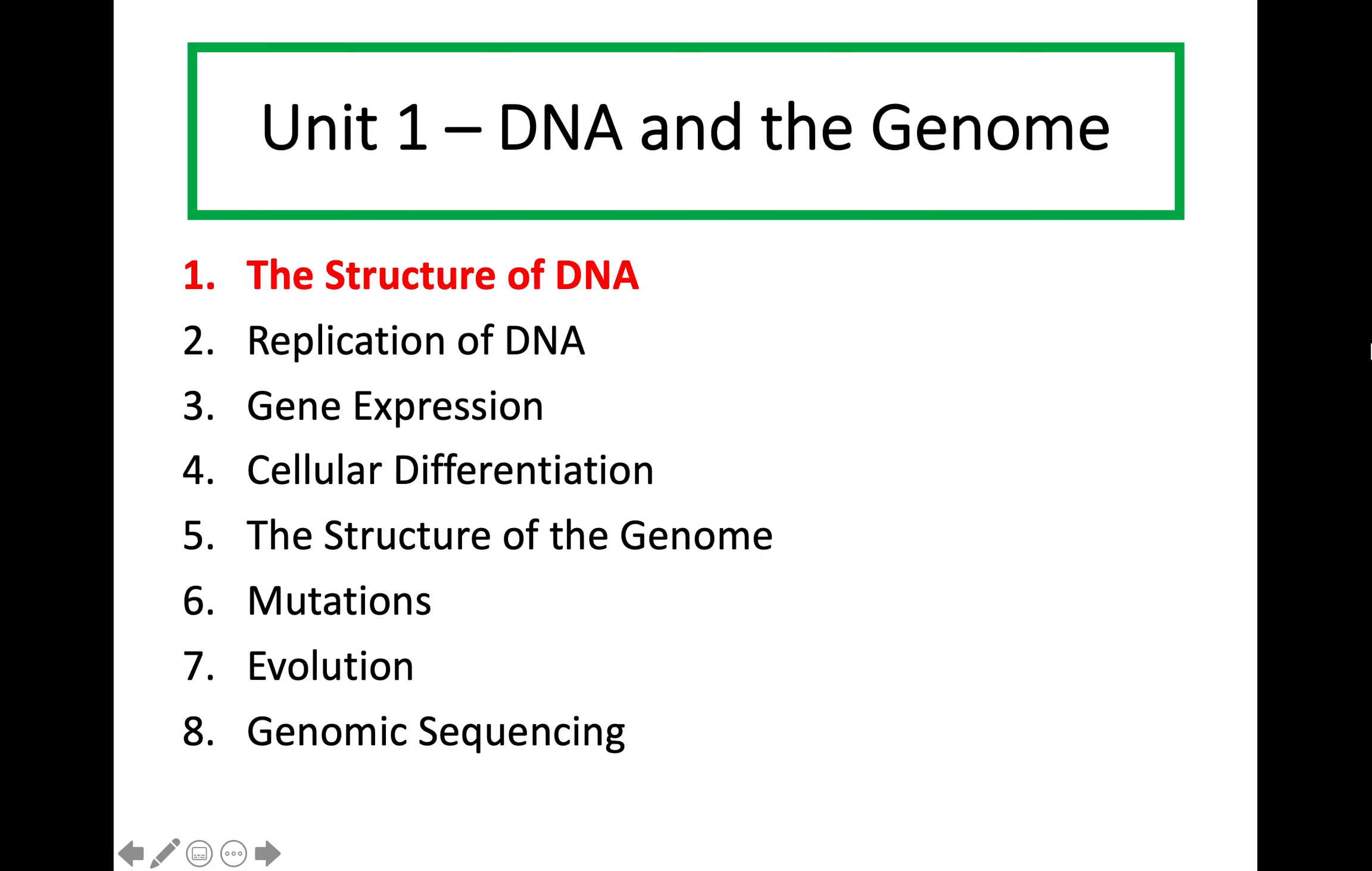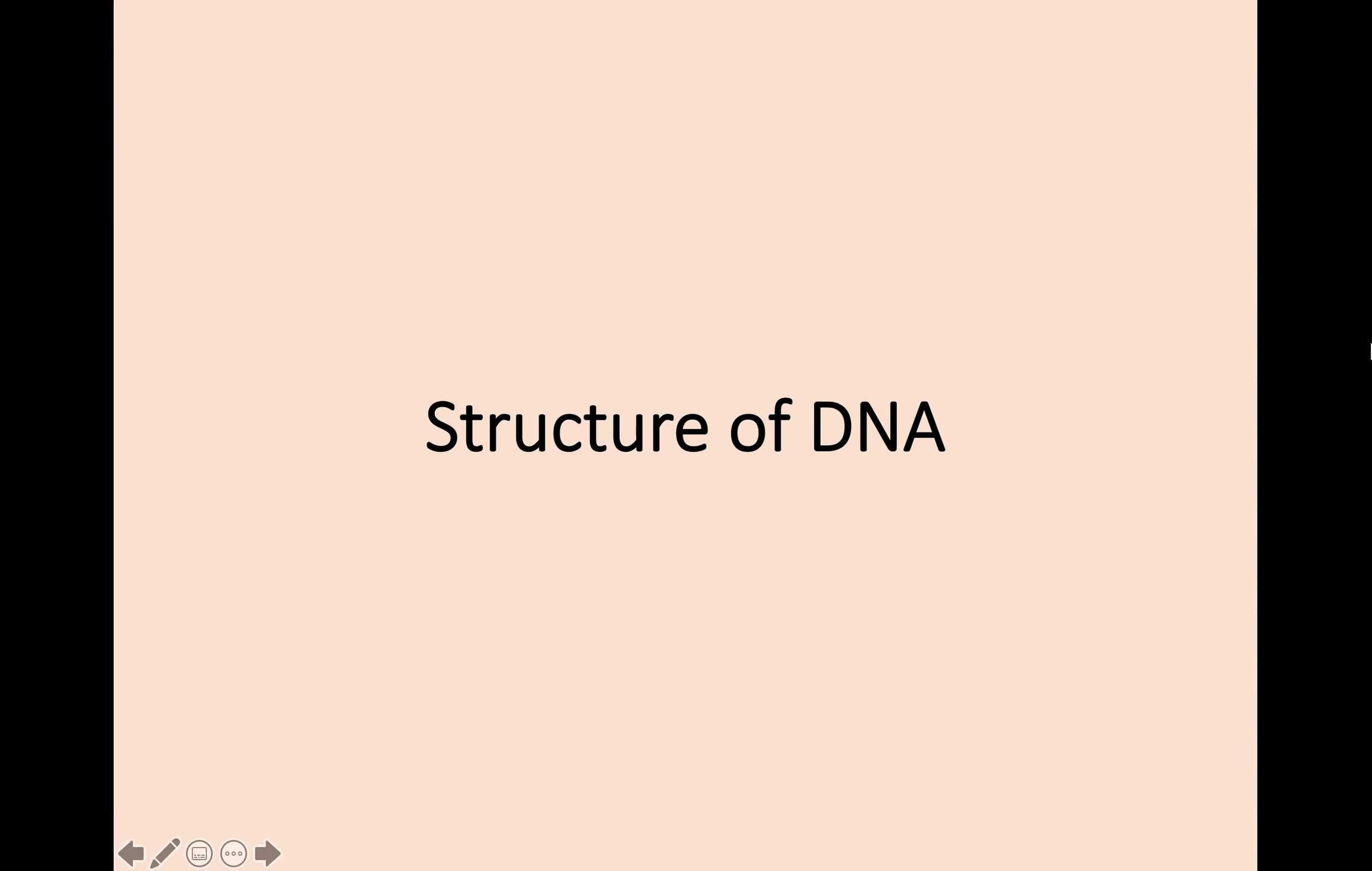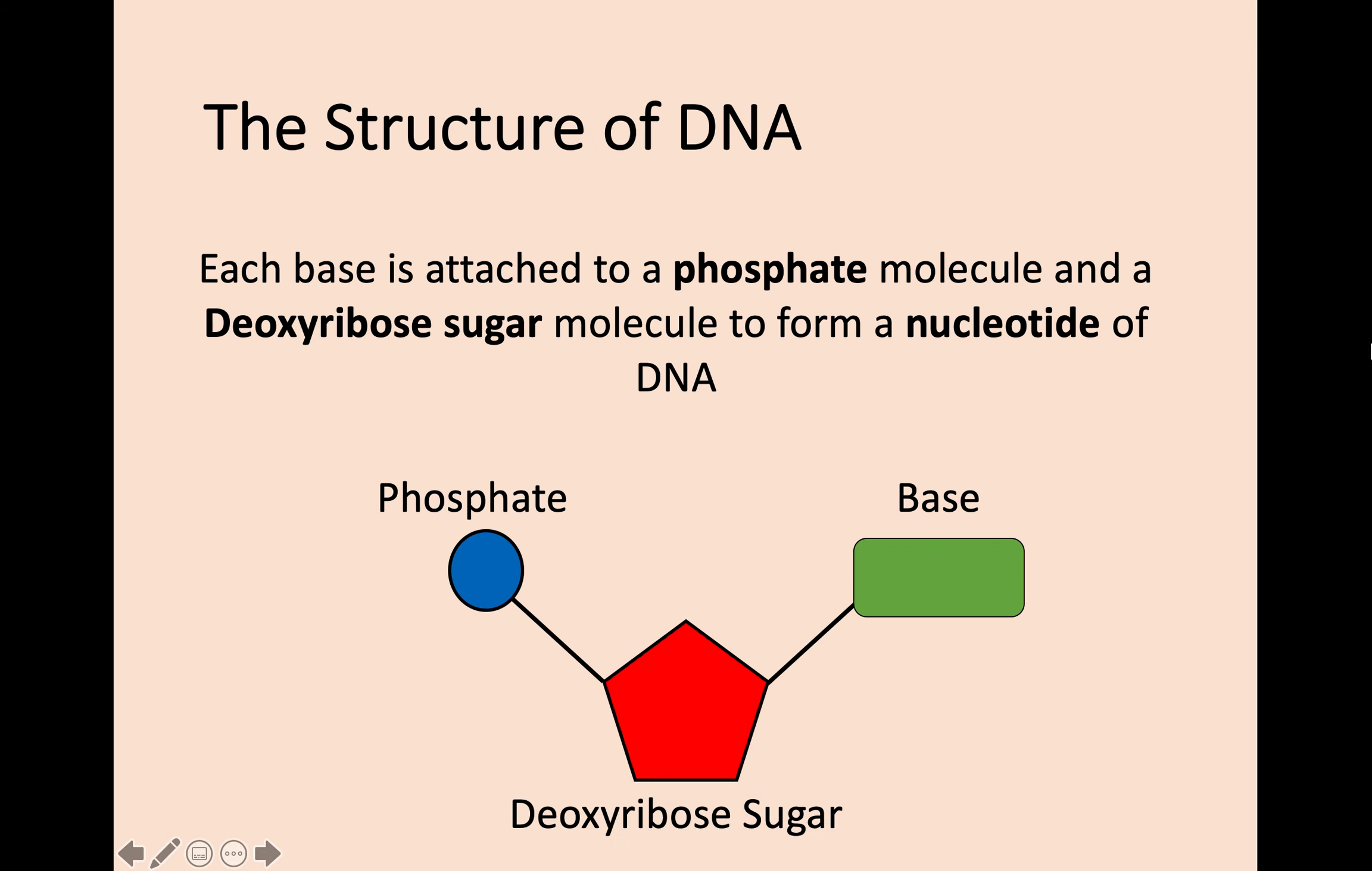We're going to start right at the beginning of Unit 1 with Key Area 1, which is the structure of DNA. Hopefully you remember from National 5 Biology that the structure of DNA is a double-stranded helix held together by four bases: adenine and thymine, and cytosine and guanine. That is still true, but we're going to go into a bit more detail in Higher Biology, starting off with the nucleotide.